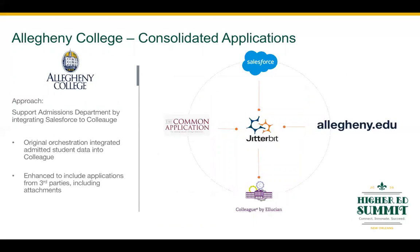Our next connected campus is Allegheny College, a small liberal arts college north of Pittsburgh, PA. Allegheny was recently named by US News as one of the 12 most innovative liberal arts colleges in the nation. You'll see this innovation in their Salesforce implementation, which just continues to grow. Allegheny's original orchestration supported the admissions department's use of Salesforce by integrating admitted student data into Colleague. This first phase was up and running in less than a week. They then continued to enhance the admissions department's use by bringing third-party applications from the Common Application form into Salesforce, including attachments like videos and PDFs that students included as part of their application.